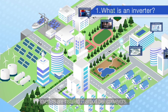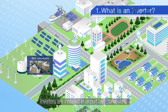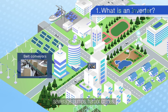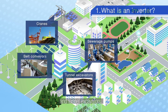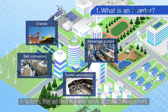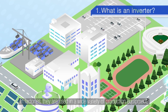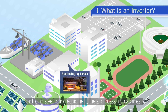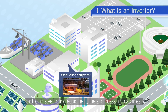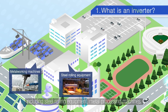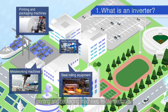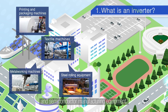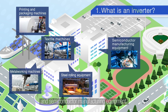Inverters are installed in airport belt conveyors, sewage pumps, harbour cranes, and tunnel excavators. In factories they are used in a wide variety of production equipment including steel rolling equipment, metal processing machines, printing and packaging machines, textile machines, and semiconductor manufacturing equipment.